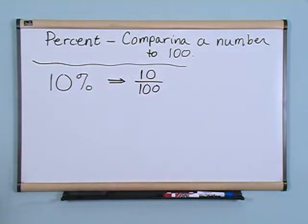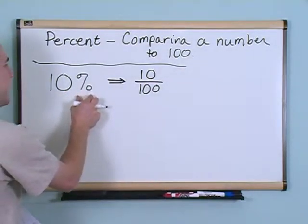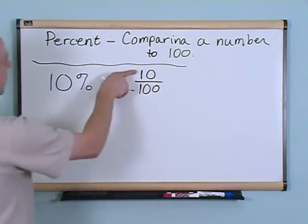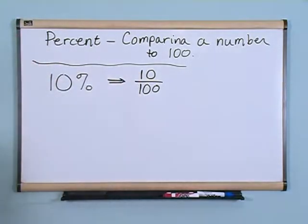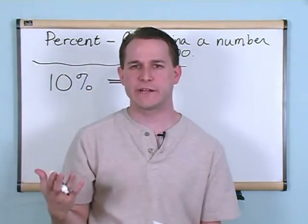And I'm going to write 100 down underneath it. So I'm going to write a fraction down. Because what we're doing here is anytime you have 10%, it means 10 in comparison to 100. I'm just going to write the 10 on the top and the 100 on the bottom because those are the two numbers I'm interested in, 10 compared to 100.